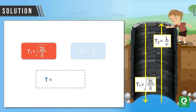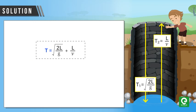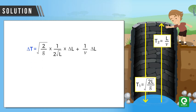Therefore, total time T1 plus T2 is equal to square root of 2L by g plus L by V. On differentiating this with respect to length, we get ΔT equal to square root of 2 by g into 1 by 2 root L into ΔL plus 1 by V into ΔL.